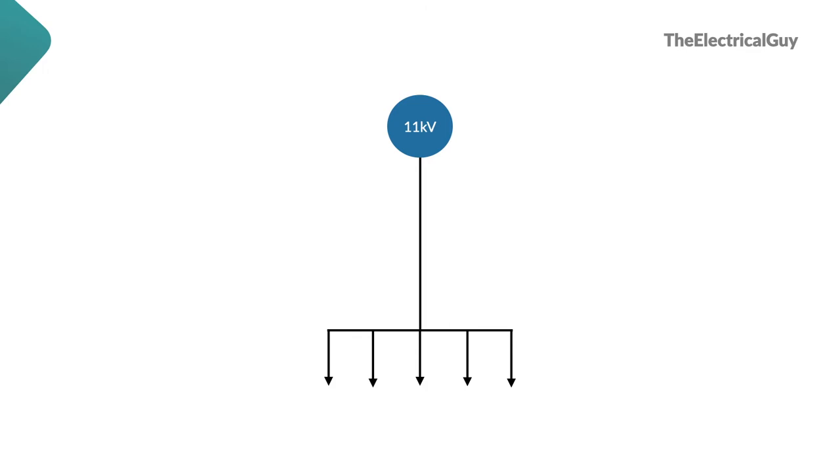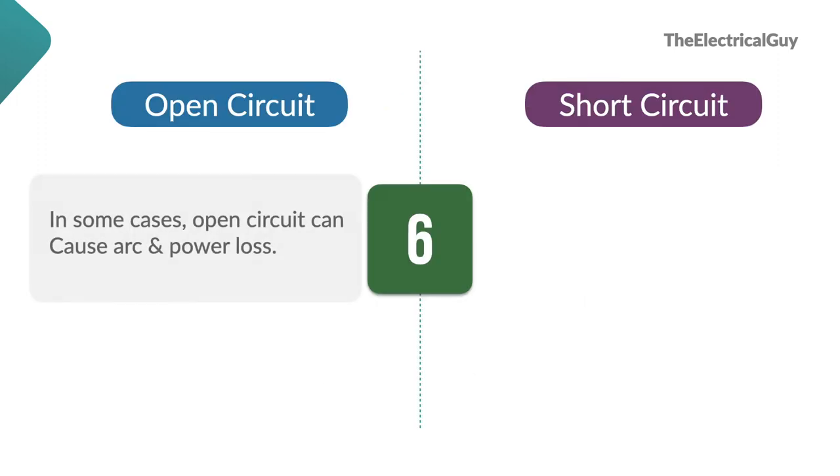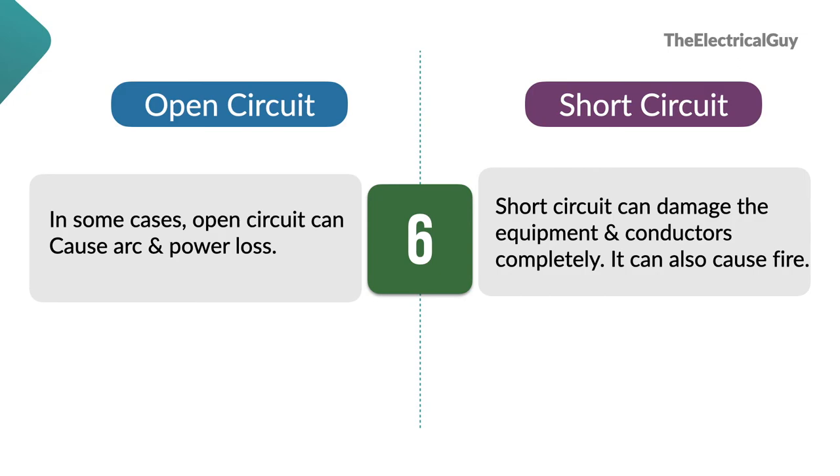In some cases, open circuit is good. What are those cases? If you know, share it via comments. But in some cases, open circuit can also get dangerous. Let's say a cable is carrying high voltage and it got brake at one point. Now, the entire voltage will come across that open. If the voltage is enough, an arc will get stuck in between the brake and that can further cause significant power loss. Short circuit is always dangerous. There is no situation where short circuit is good. Short can also cause fire.